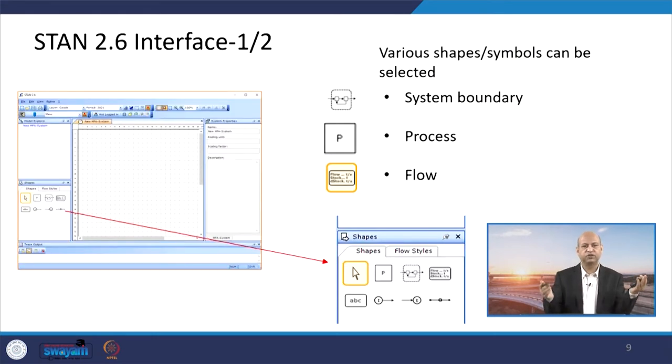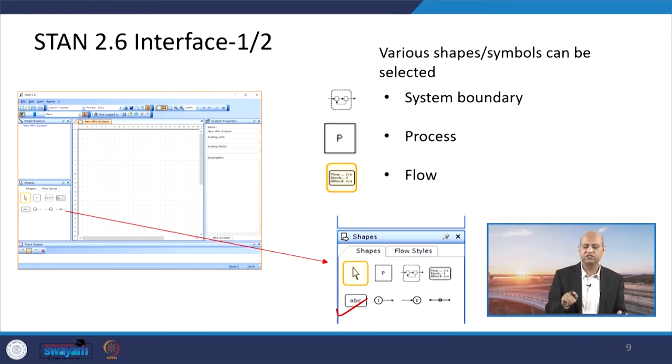This is the interface which you will see after downloading when you start using it. When it will be on the screen, this kind of screen will be visible. Like system boundary, these kind of symbols are there, shapes and symbols. System boundary is there, then arrow figure or text is there, and flow related diagrams are there, processes related P, so all these are very easy to follow.